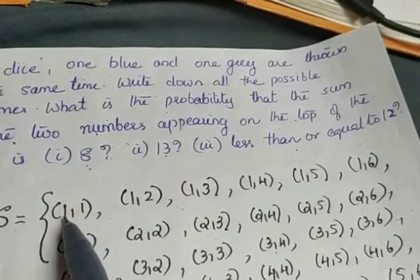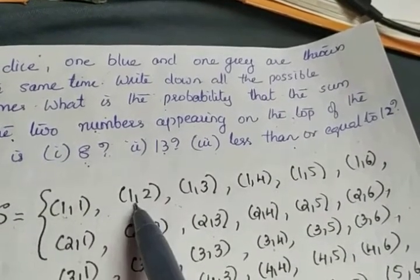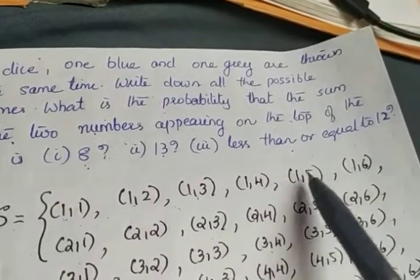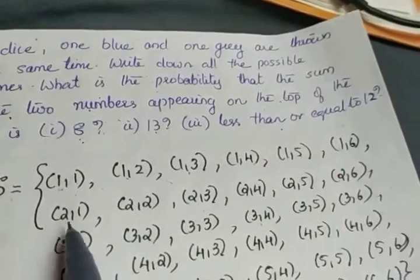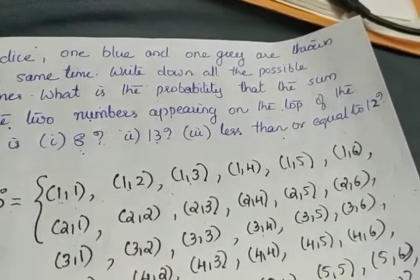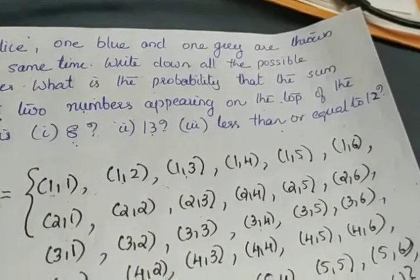So this is the first case. What is the sum? 1 plus 1 is 2. What about this case? 1 plus 2 is 3. This is 4. 4 plus 1 is 5, 5 plus 1 is 6, 1 plus 6 is 7. 2 plus 1 is 3, 2 plus 2 is 4. Like that, we can count and see all the 36 events.